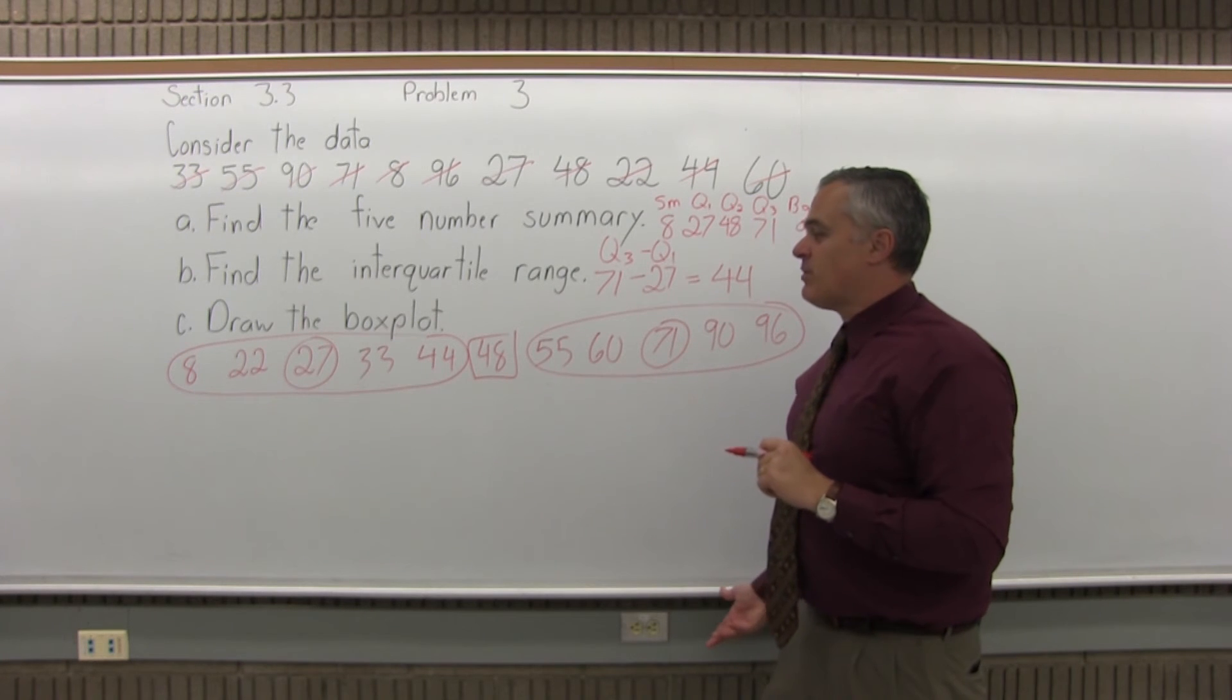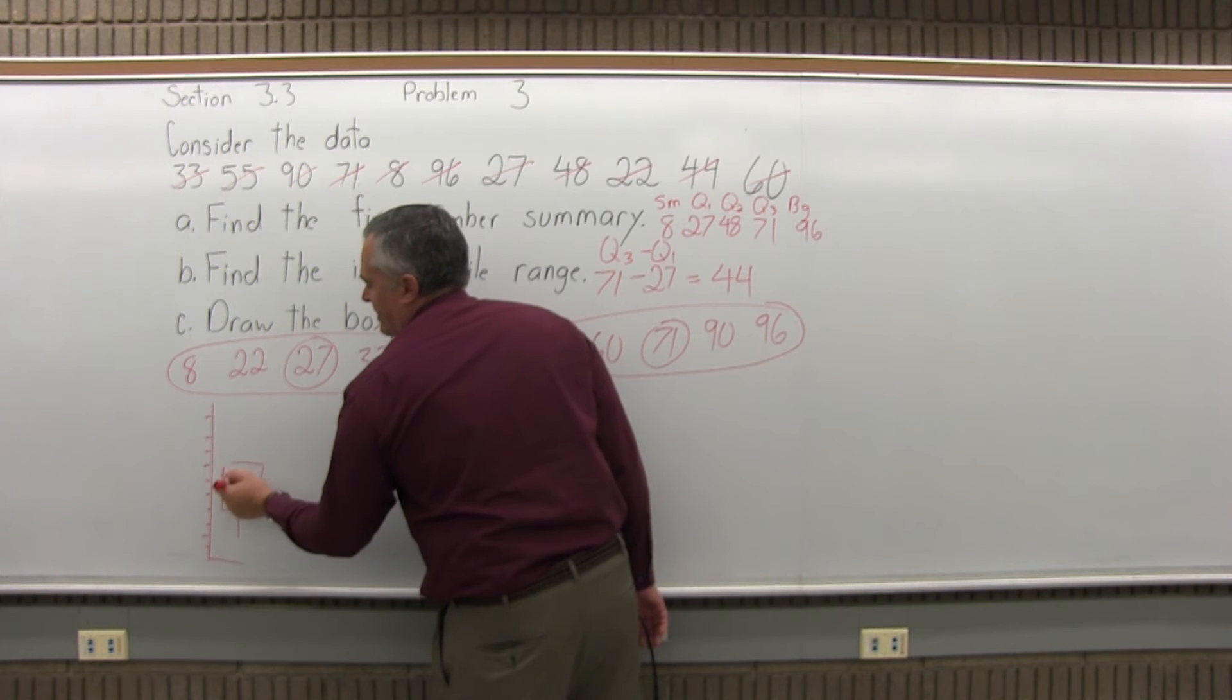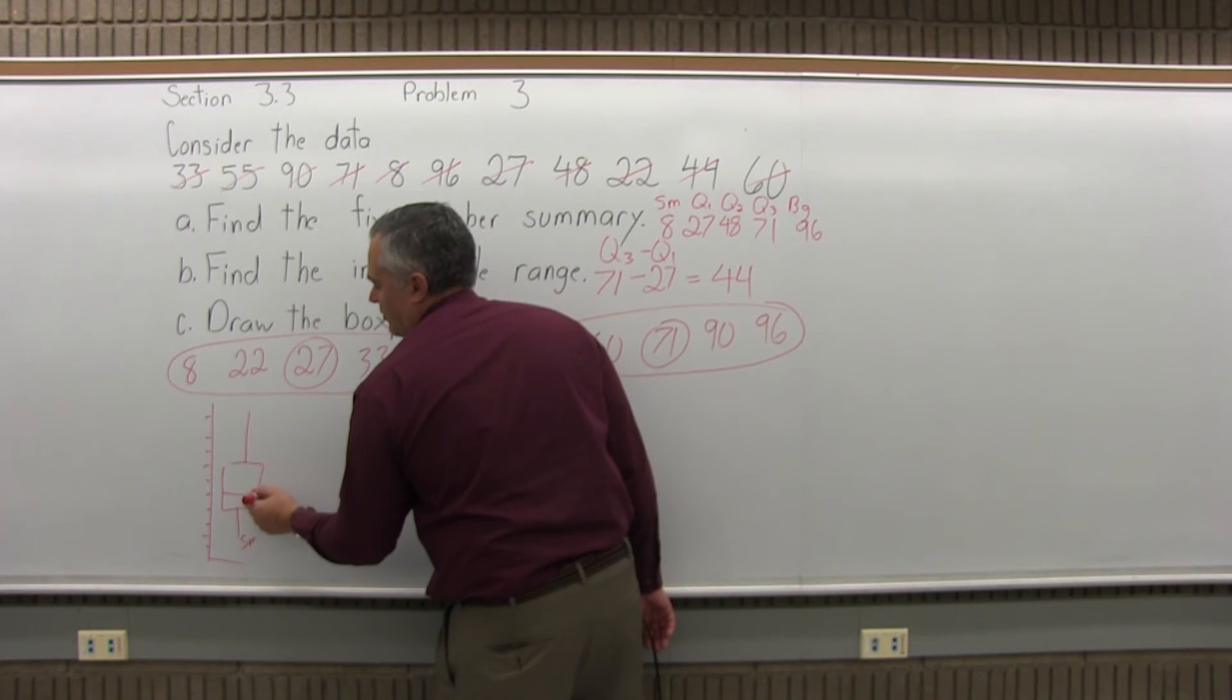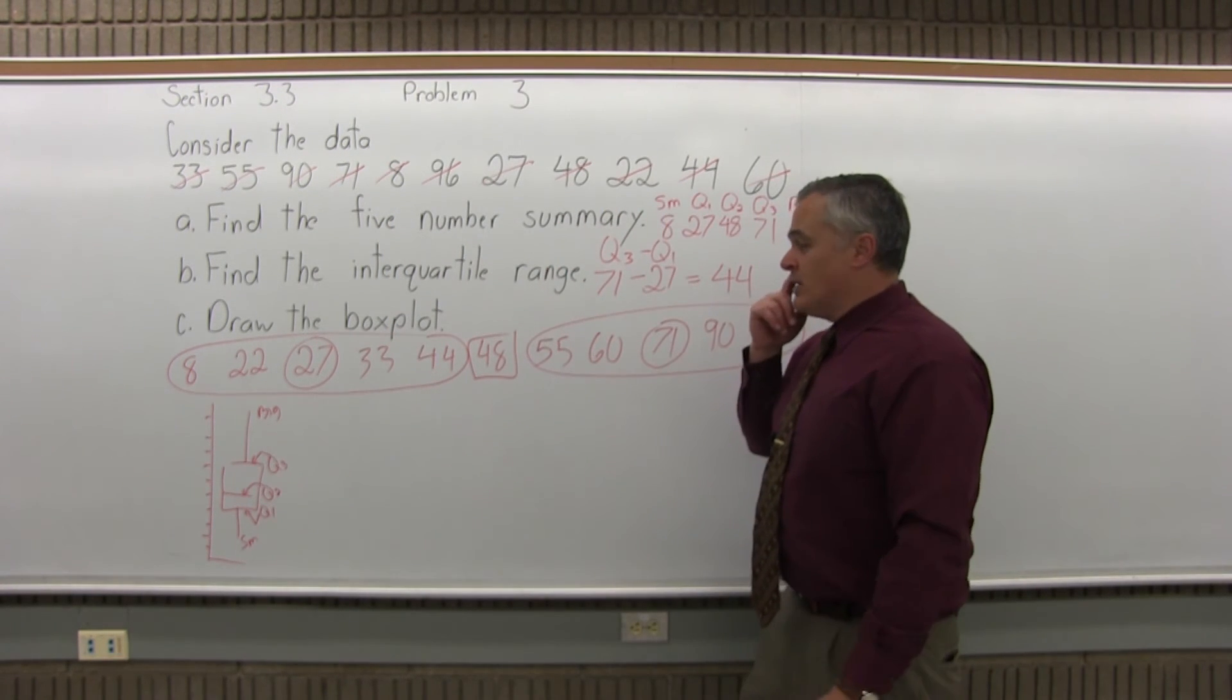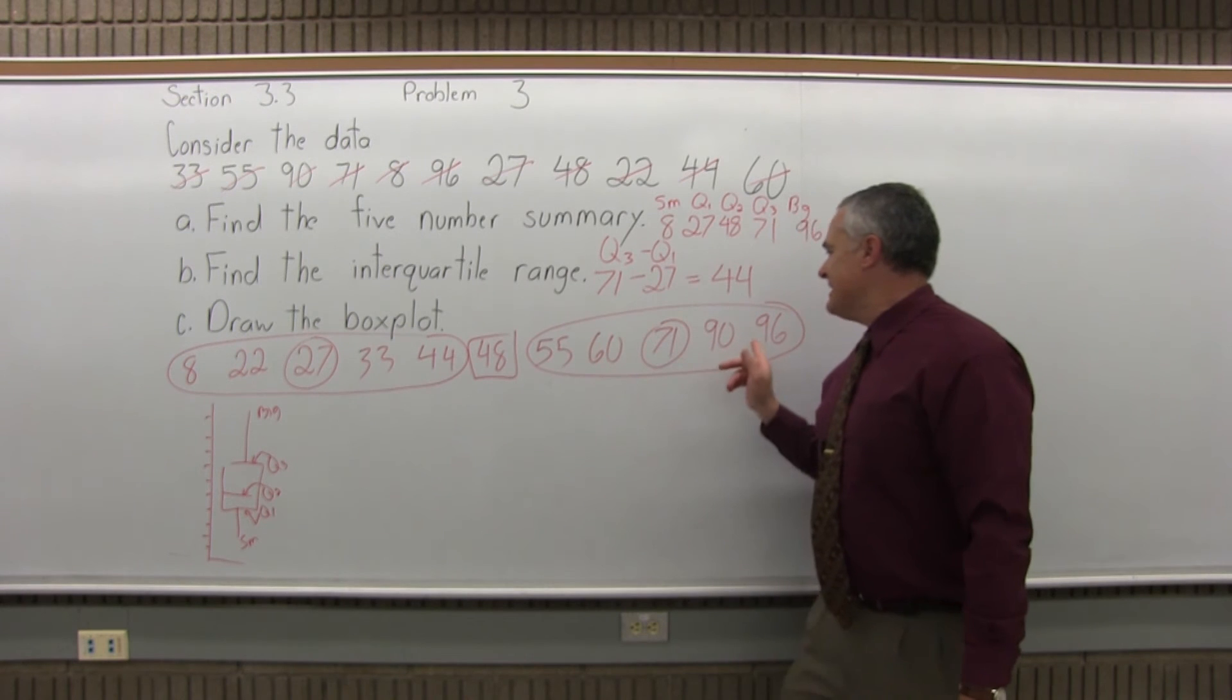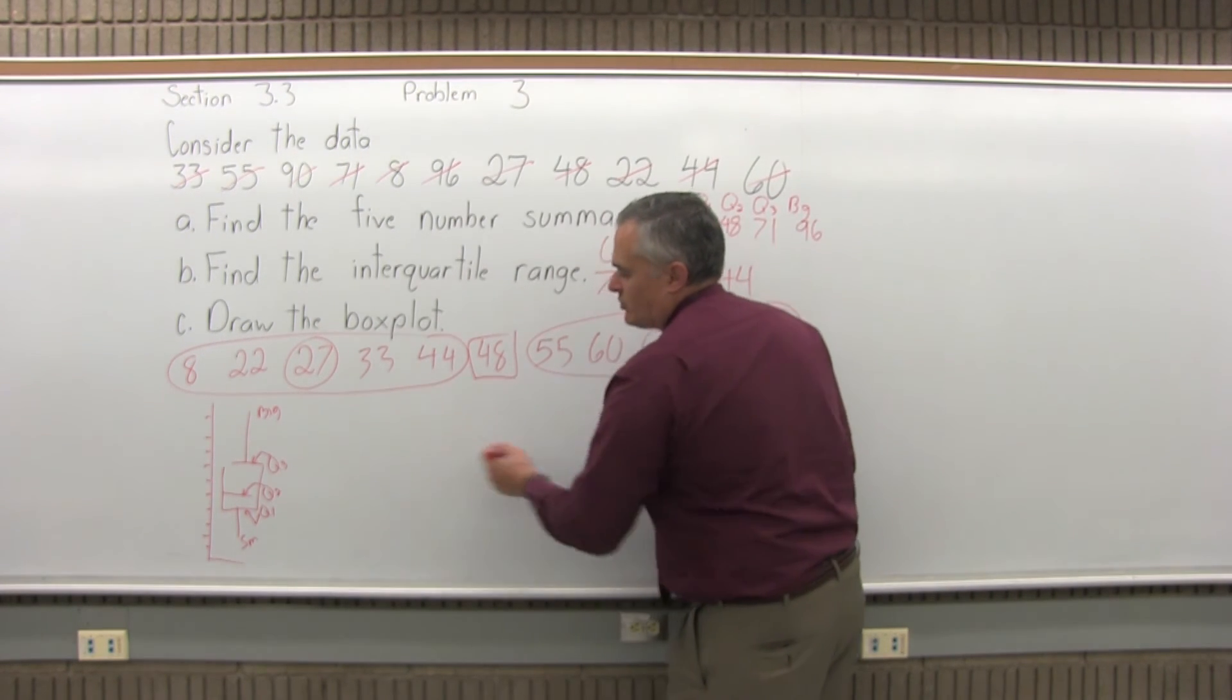And part C, draw the box plot. So a box plot can be drawn horizontally or vertically. Basically, you're going to have a number scale with a box. The parts of the box occur at different heights: smallest, Q1, Q2, Q3, and biggest. Q1 is the bottom edge of the box, Q2 is the line in the box, Q3 is the top edge. For this particular problem, the biggest number is 96. I don't want to make 96 lines, so going by 10 is a good choice. 10 lines will get me up to 100.